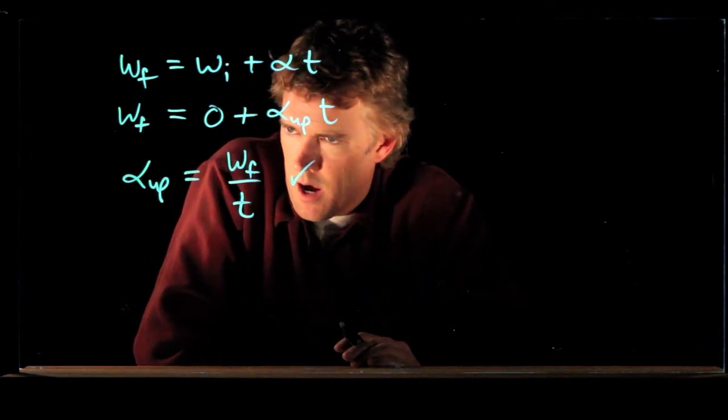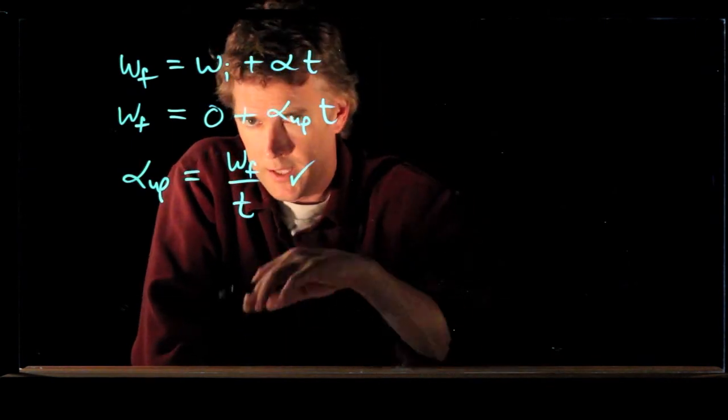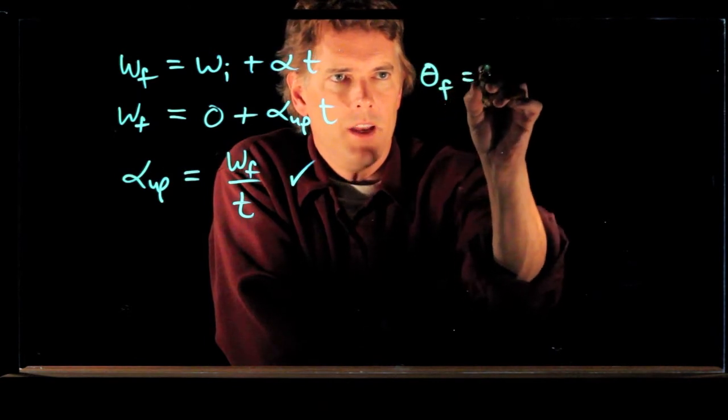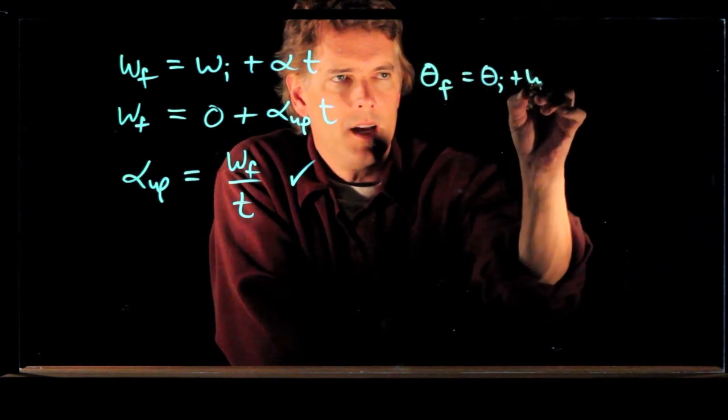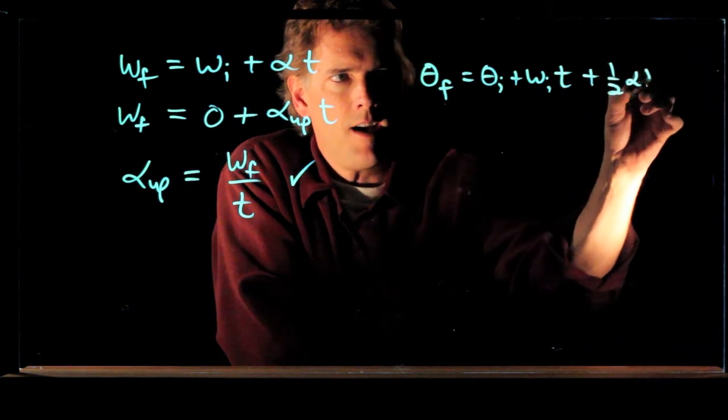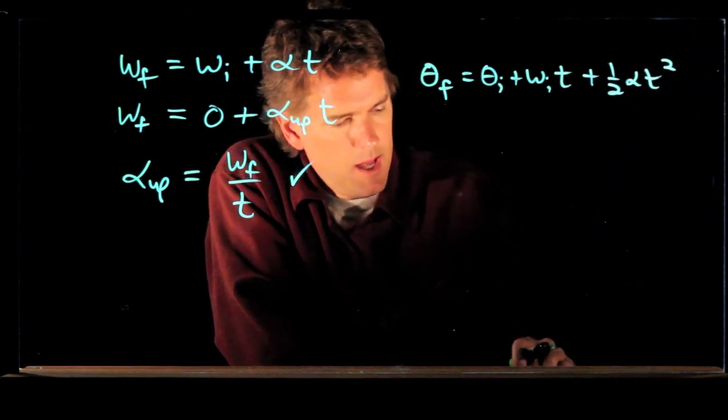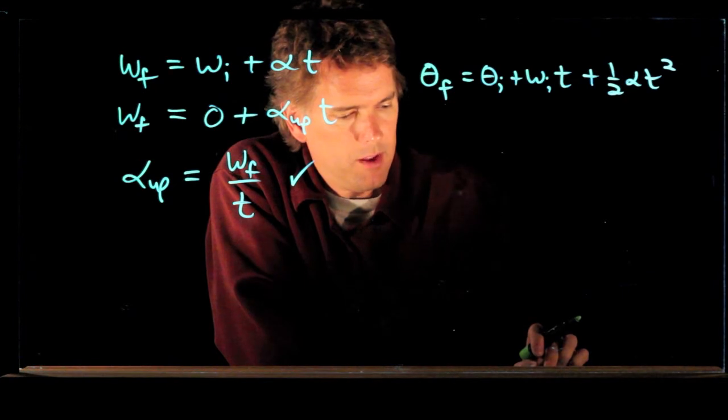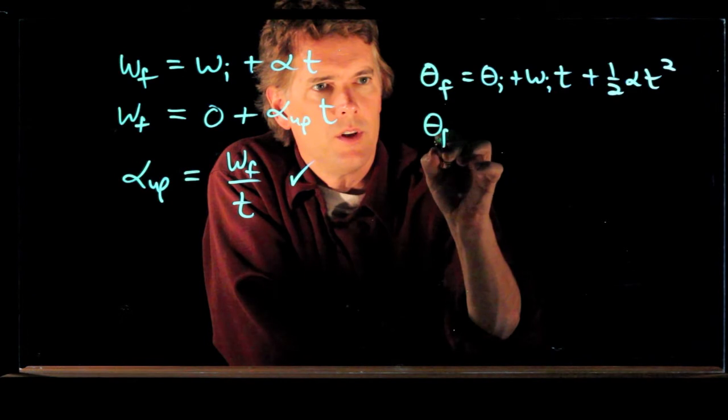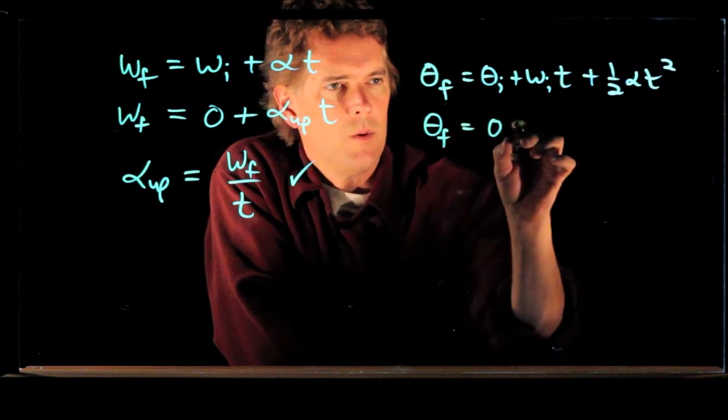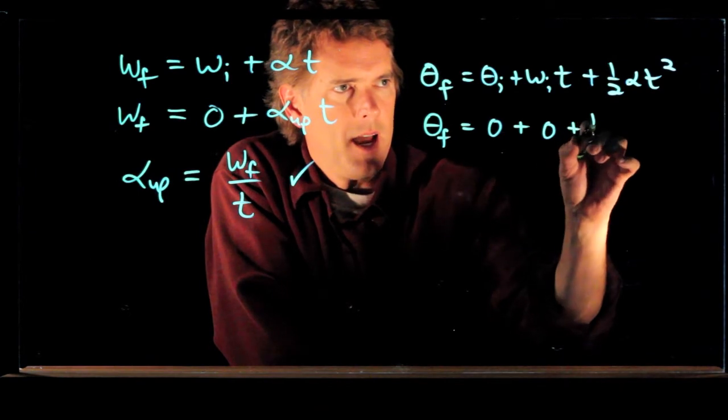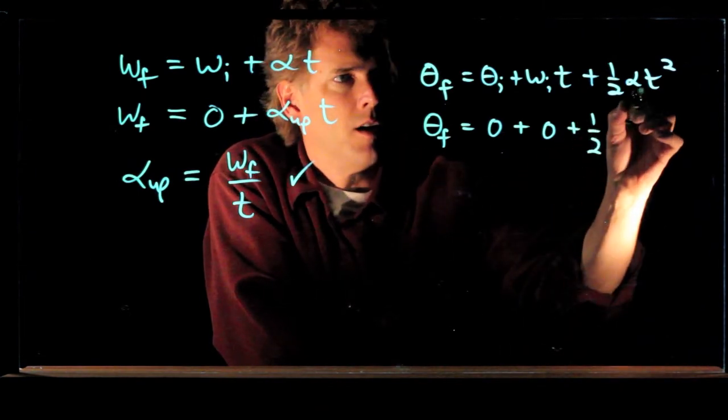So now, with that knowledge, we can go back to our other kinematic equation and calculate theta f. Theta f equals theta i plus omega initial times t plus one half alpha t squared, and now we know all these things. We know that theta initial is equal to zero, we know that omega initial is equal to zero, and now we have alpha up.